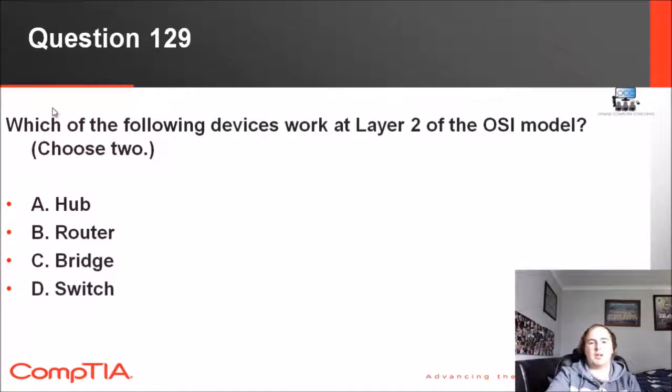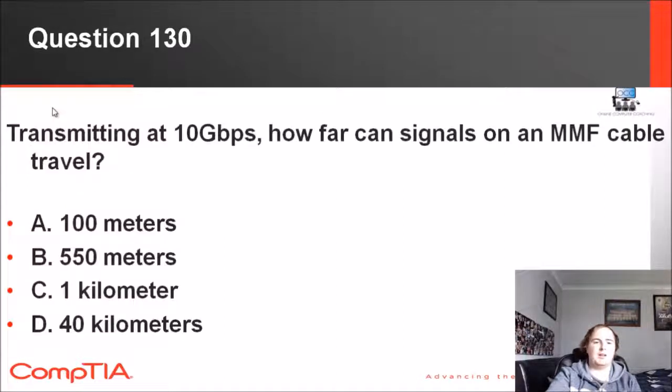129: Which of the following devices work at layer 2 of the OSI model? We've got two to pick from—hub, router, bridge, and switch. We just got to figure out what isn't at layer 2. A router is a layer 3 device, so we can cross that off. A hub is a layer 1 device. So bridge and switch are the answers there.